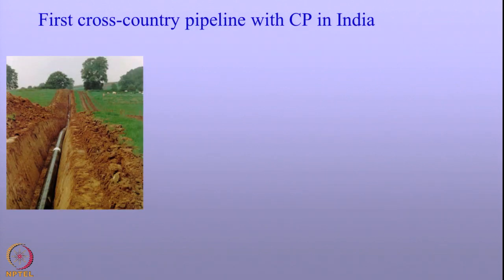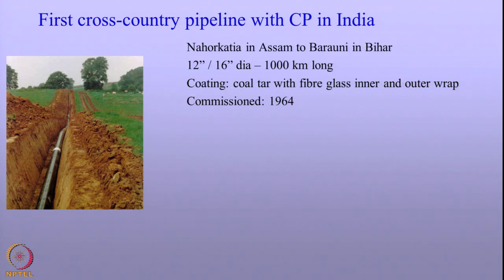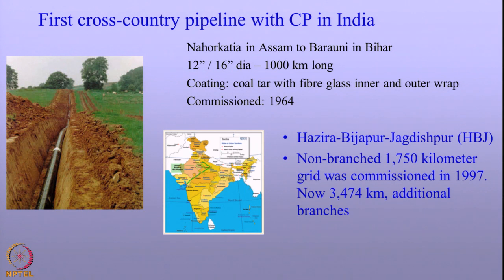If you look at the pipeline history in India, the first pipeline was established in 1964 from Nakhokathia in Assam to Baruni in Bihar. It was about 1000 kilometers long and was coated with coal tar with fiberglass inner and outer wrap. In 1997, another pipeline between Azira and Jagdishpur, going towards Bijapur, famously called the HBJ pipeline, was 1750 kilometers long. Subsequently, additional branches were added, and now it is close to 3500 kilometers of pipelines.